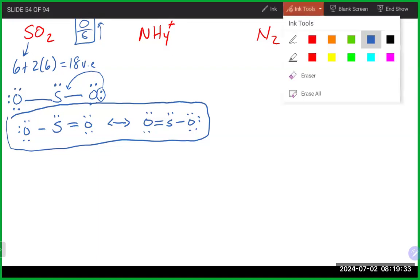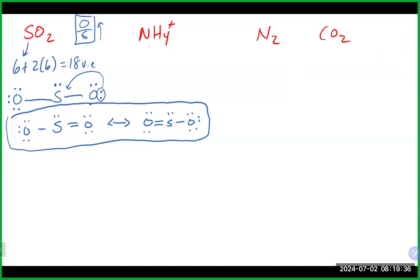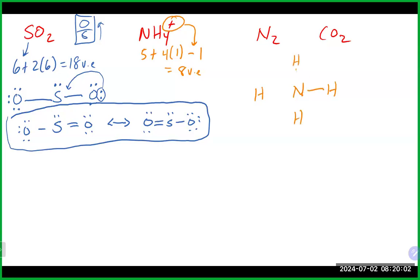For NH4+: nitrogen has 5 valence electrons, each hydrogen has 1 — that's 5 + 4 = 9, but the plus charge means we subtract one, giving us 8 valence electrons. Hydrogen cannot be in the middle, so nitrogen goes in the center. Single bond to all four hydrogens: 2, 4, 6, 8 — that uses everything. Put a bracket and positive charge on the outside. Hydrogen only needs two electrons, so everyone is satisfied.